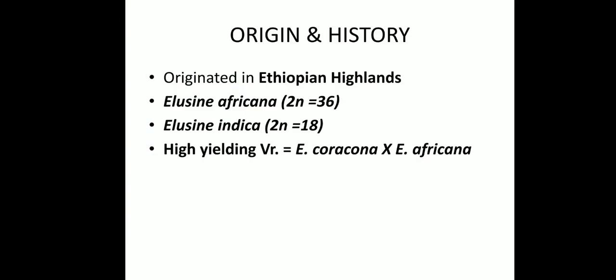Origin and History: Literature from research as well as cytological evidence suggests that Finger Millet was originated in Ethiopian highlands and introduced to India 30,000 years back. African native Eleusine africana more closely resembles cultivated Eleusine coracana than Indian local grass Eleusine indica.